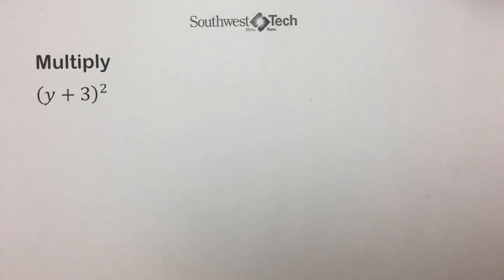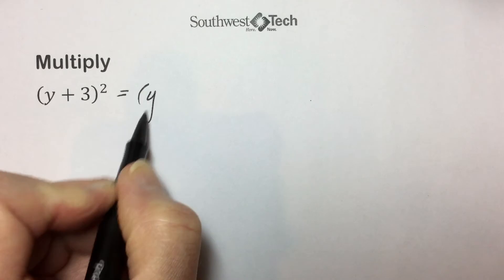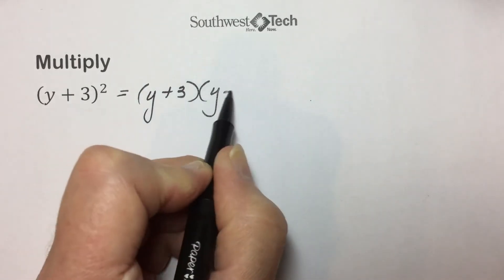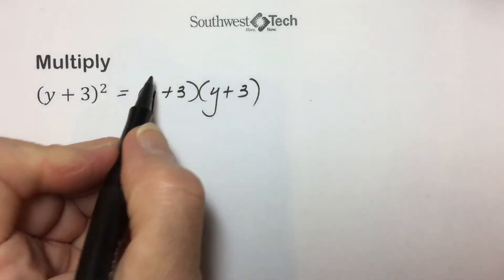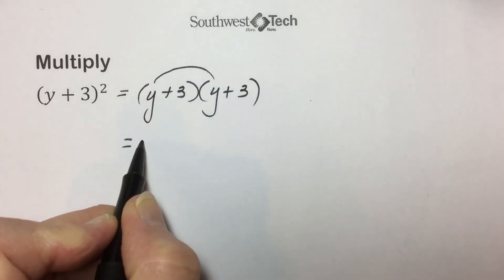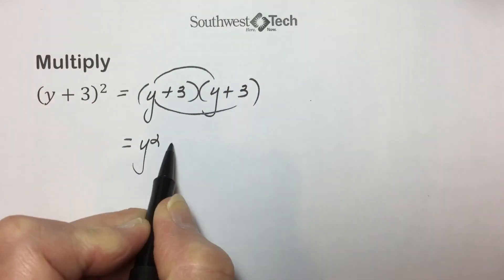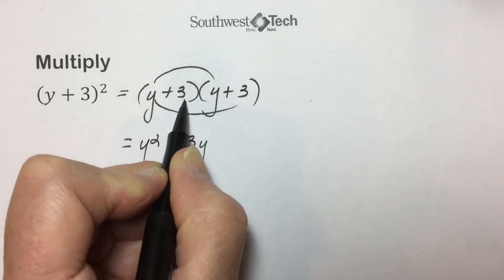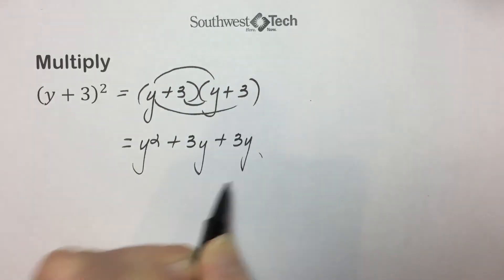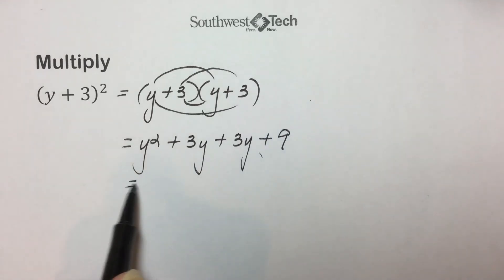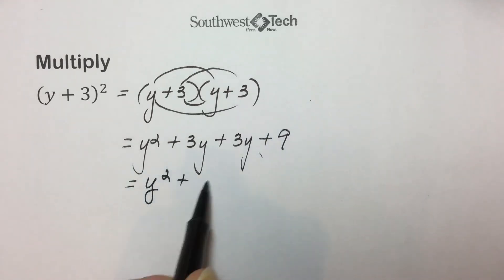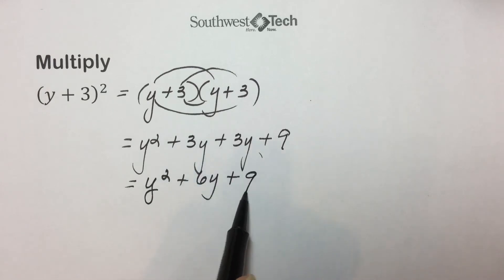Consider the square of a binomial such as (y + 3) squared. This can be expressed as (y + 3) times (y + 3), and we'll use the FOIL method to simplify this. First terms multiplied together gives us y squared. Outside multiplied together: 3y. Inside multiplied together: 3y. And last terms: positive 3 times positive 3 is 9. Simplifying gives us y squared plus 6y plus 9.